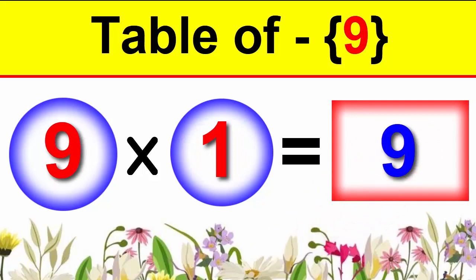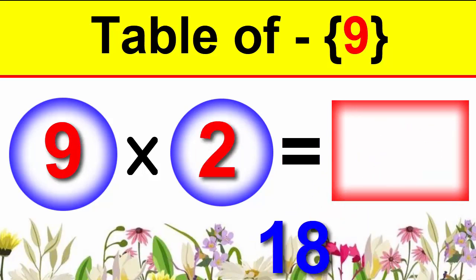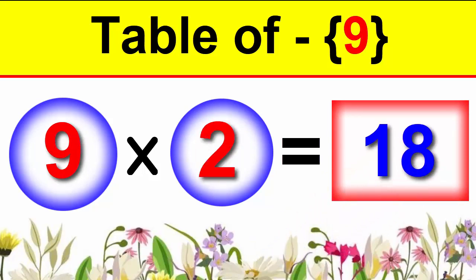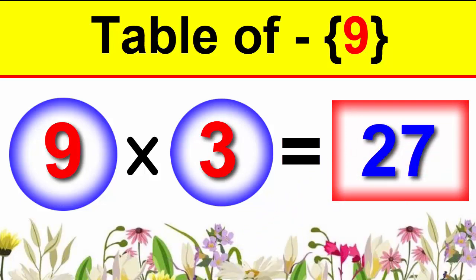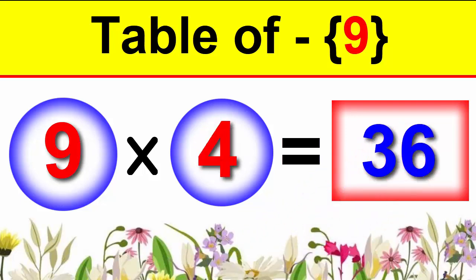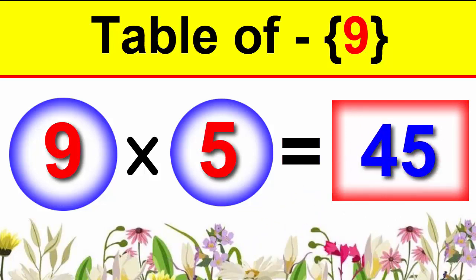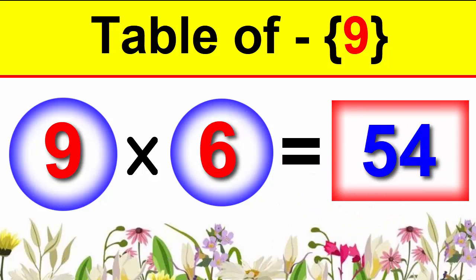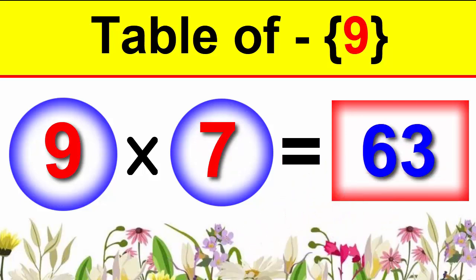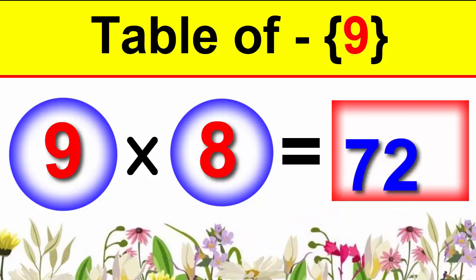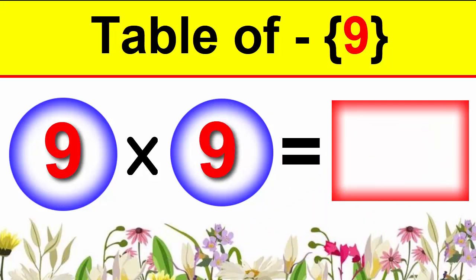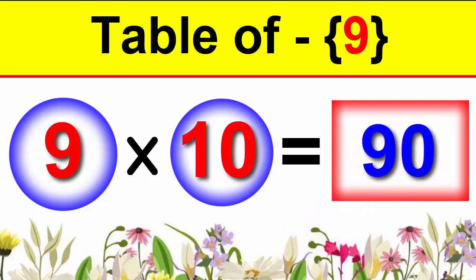9×1 is 9, 9×2 is 18, 9×3 is 27, 9×4 is 36, 9×5 is 45, 9×6 is 54, 9×7 is 63, 9×8 is 72, 9×9 is 81, 9×10 is 90.